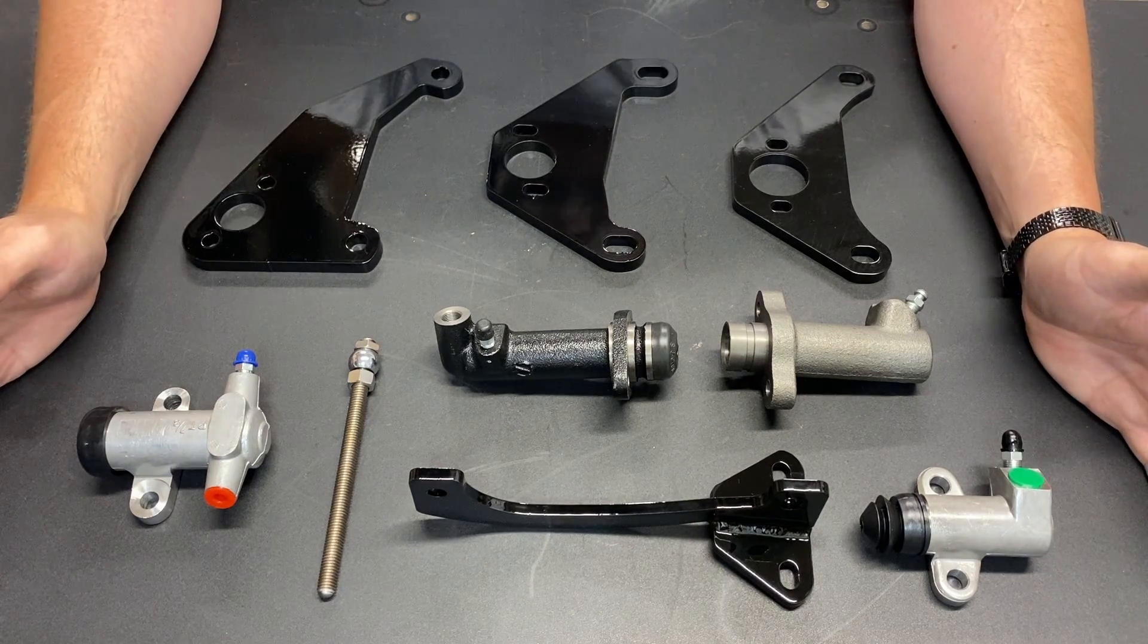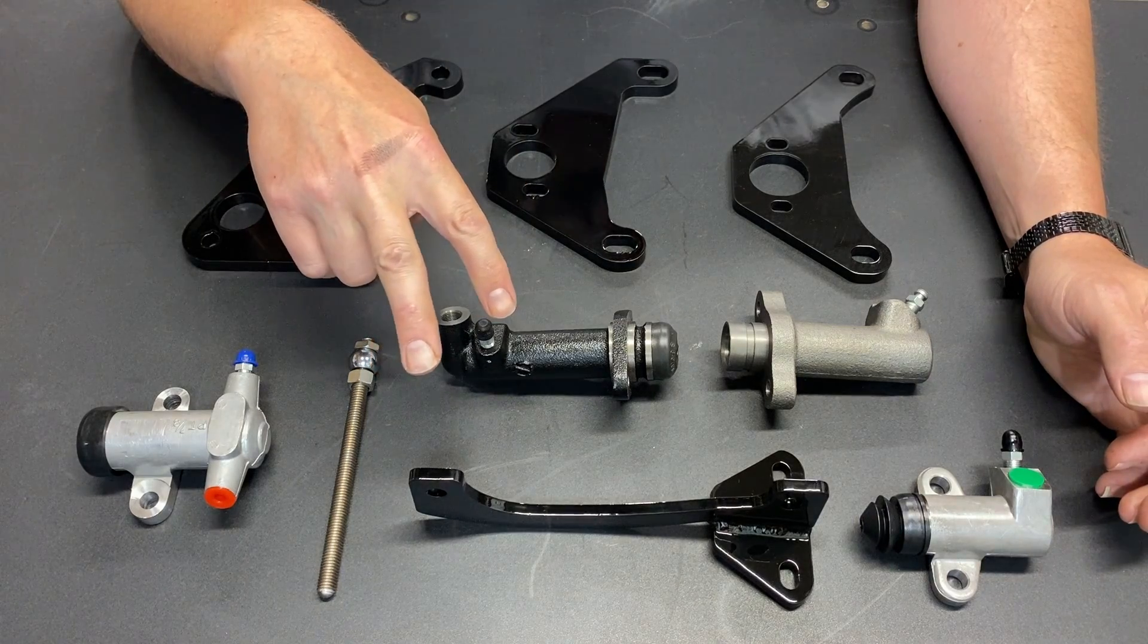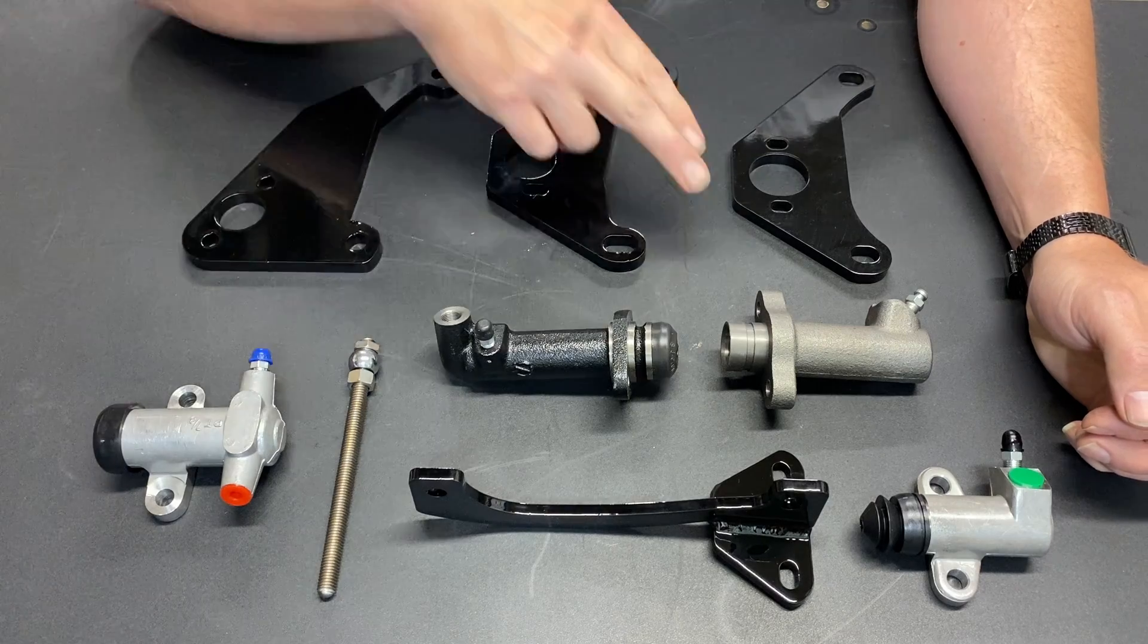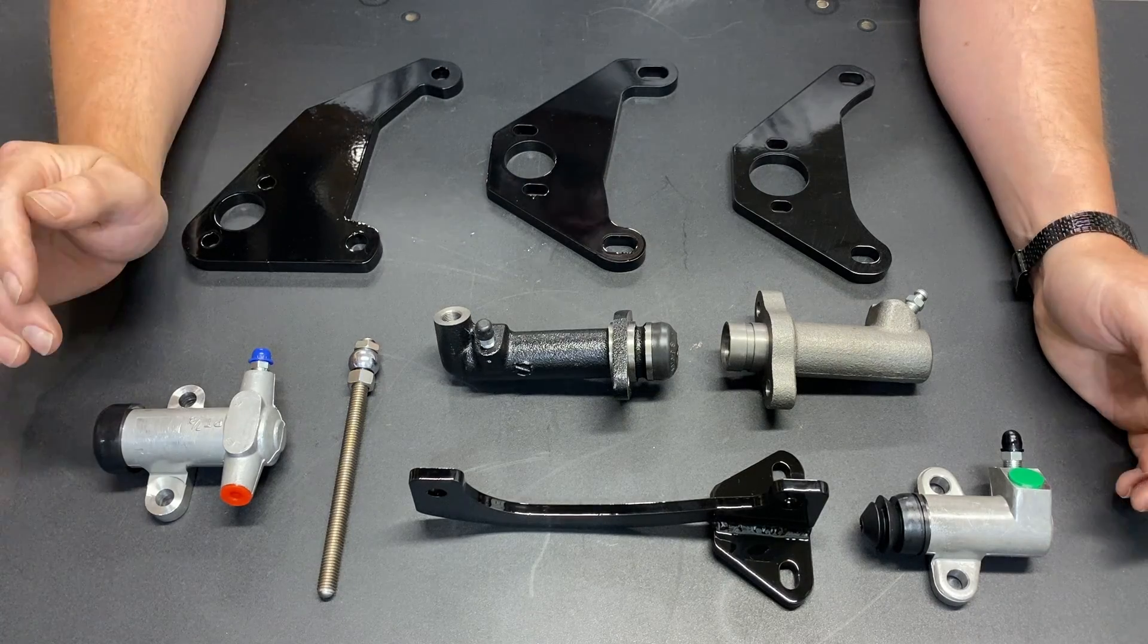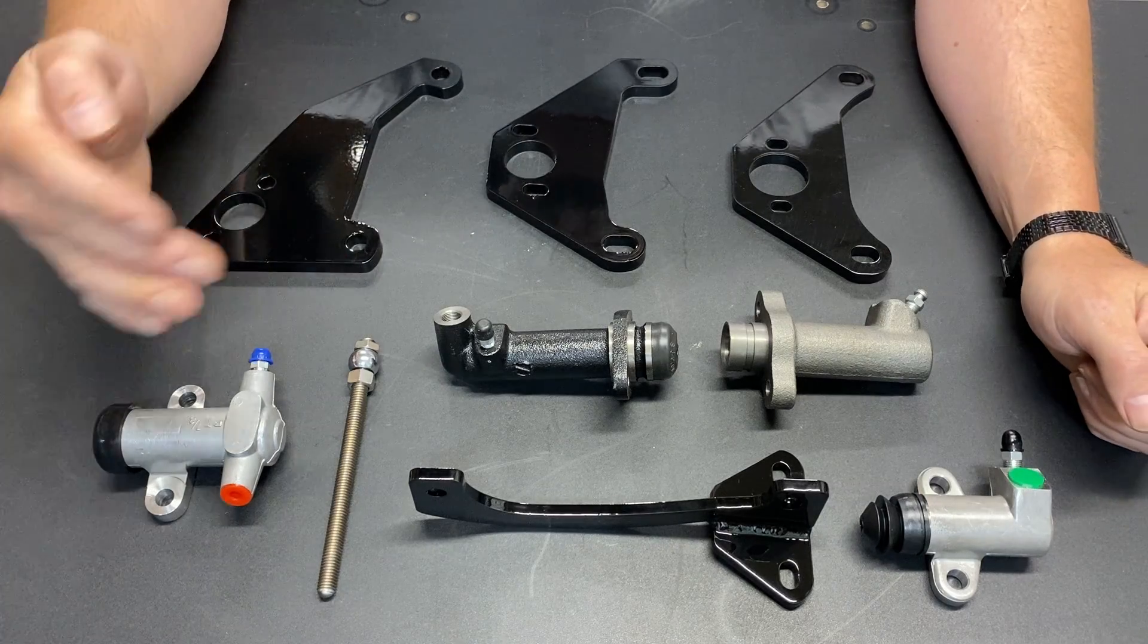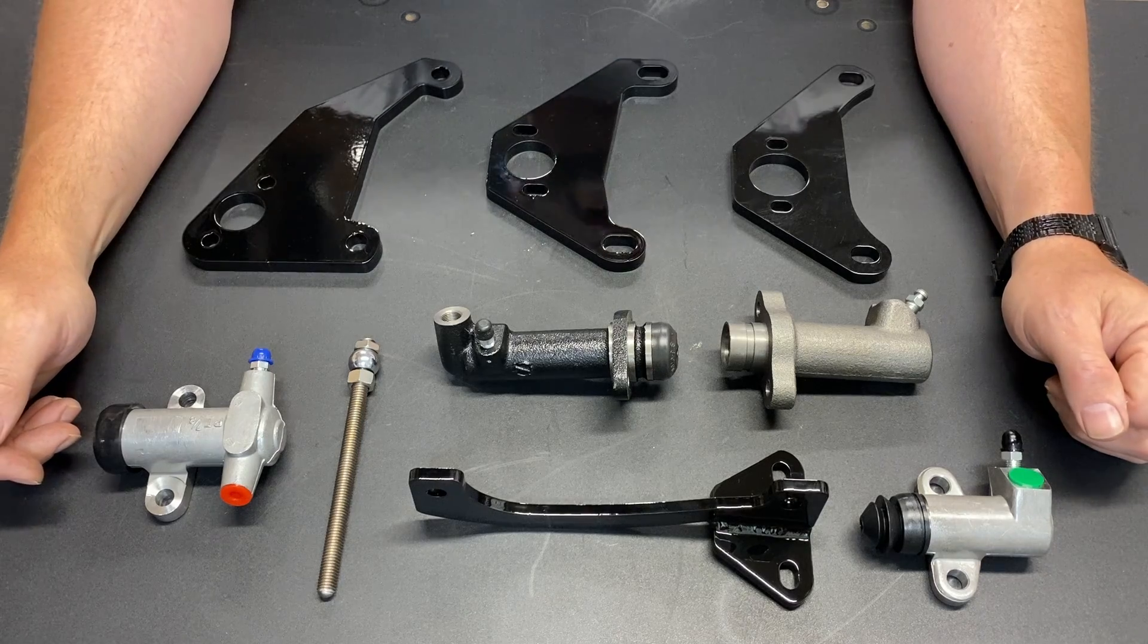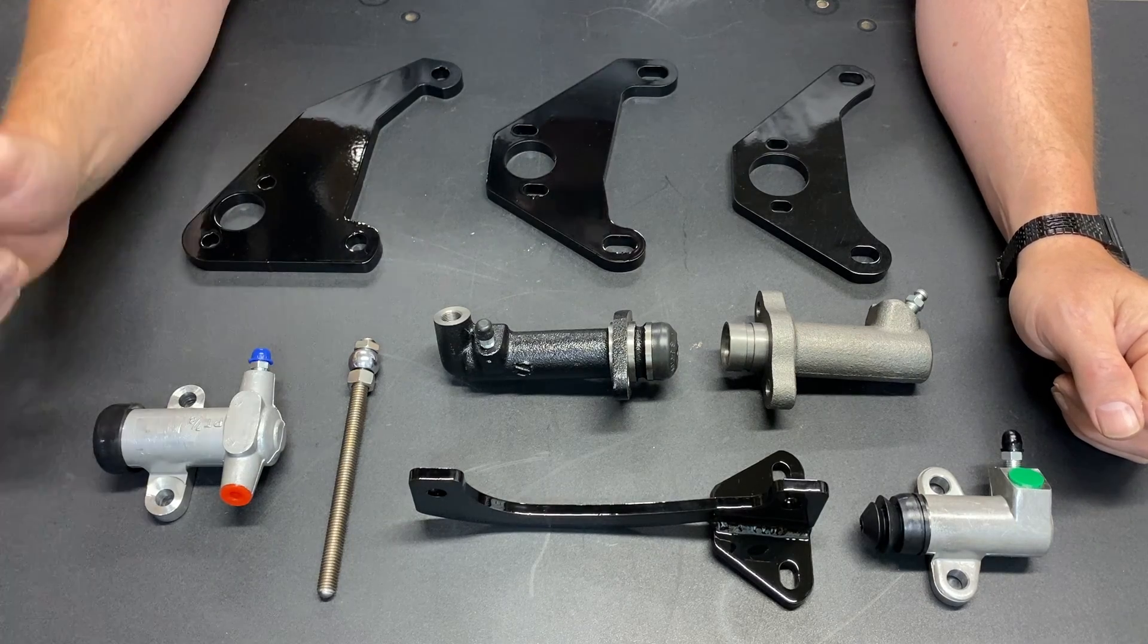Now, when I first designed these kits, I only offered two slave cylinders. This guy right here, which works in all three of these brackets and this guy right here. And both of those are a seven eighths inch bore slave cylinder. The common conventional wisdom on the Internet is if you're using a seven eighths bore slave cylinder, you need a seven eighths bore master cylinder. And sadly, like so much information on the Internet, that is a myth.